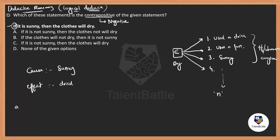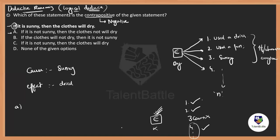Looking at option A: 'if it is not sunny, then the clothes will not dry.' This cause did not happen, but can you definitely say the effect will never happen? No — because another cause might have happened and the effect could still occur. There are many possibilities, so we cannot say this is definitely true. Therefore option A is eliminated.